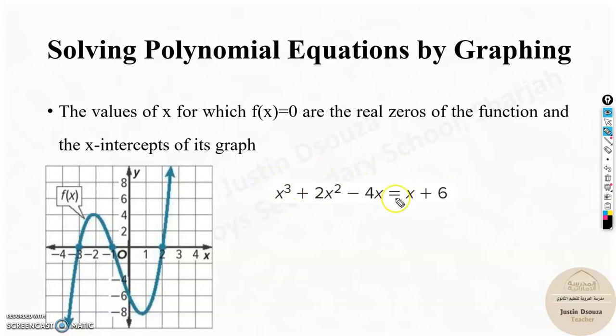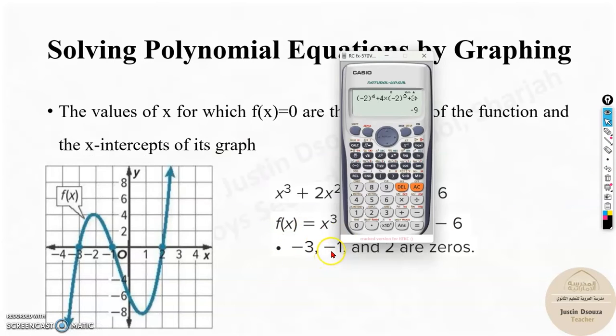Now, if you recall, if I want to know the x-intercept, I should just make the function equal to zero. If this is the function of the graph, make it equal to zero. Why? That means where is y equal to zero? At the x-intercept values. So what you need to do is rearrange this and get everything to one side. Since this is higher power, let's take everything to the other side: x³ + 2x² - 4x - x - 6 = 0, which becomes x³ + 2x² - 5x - 6. That is basically equal to zero.